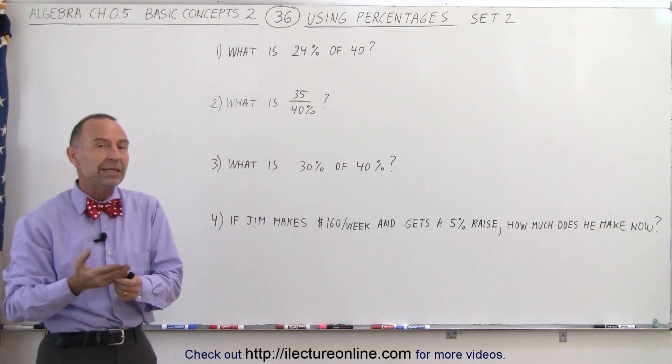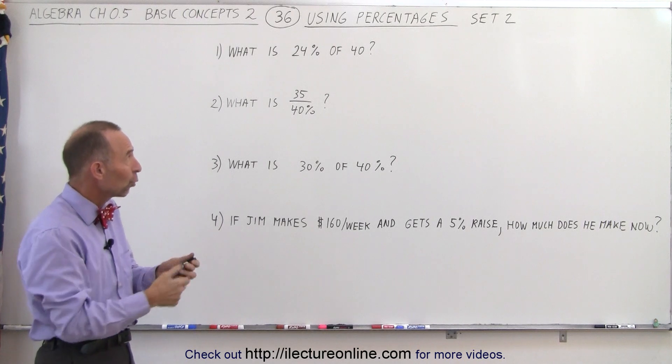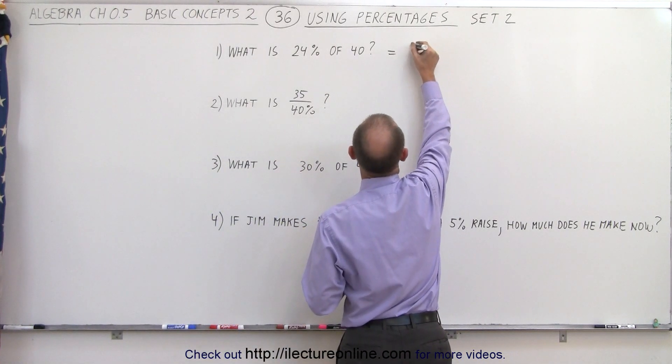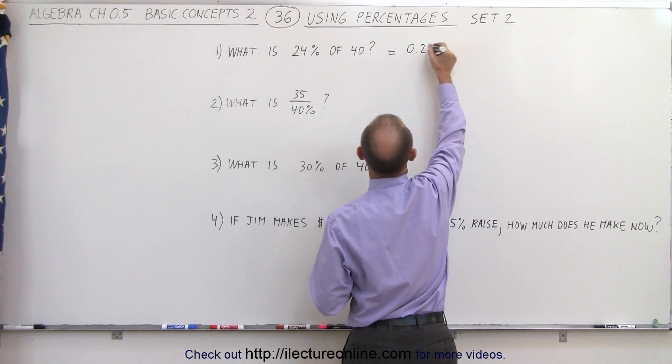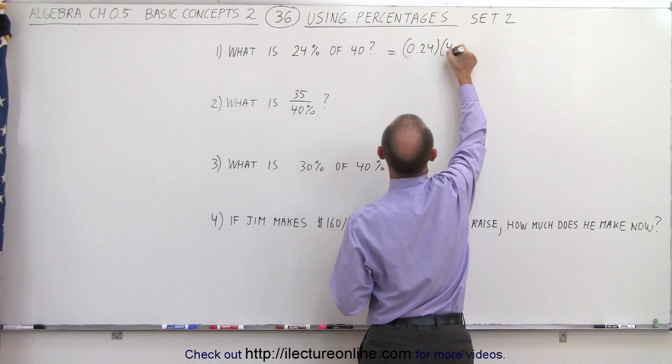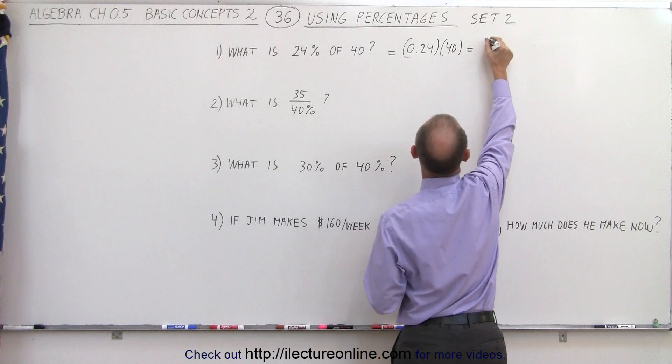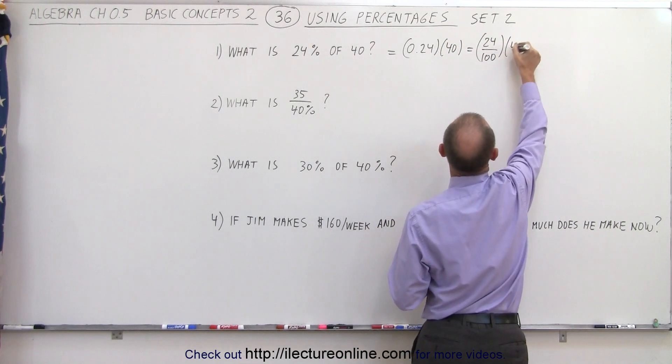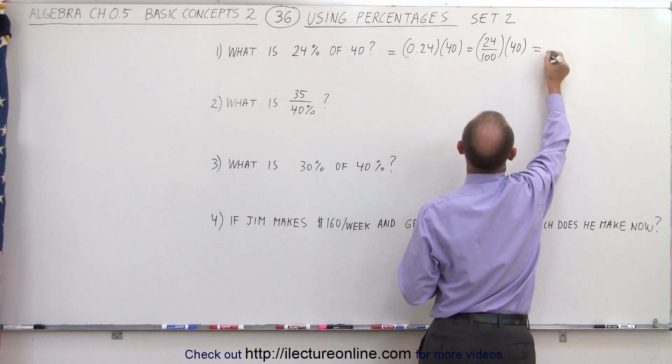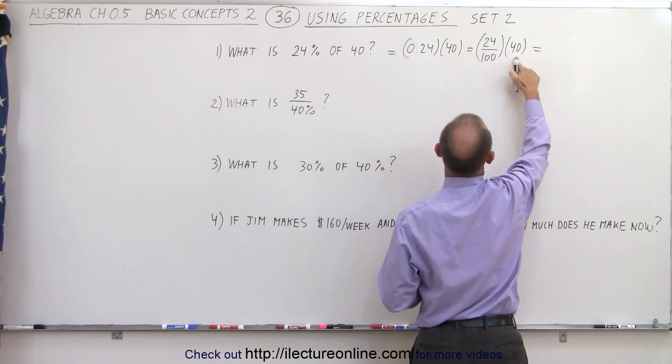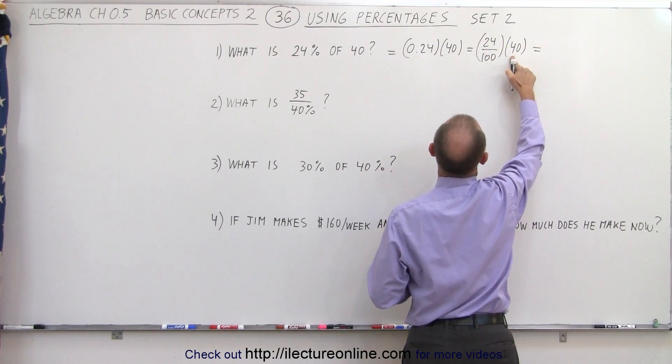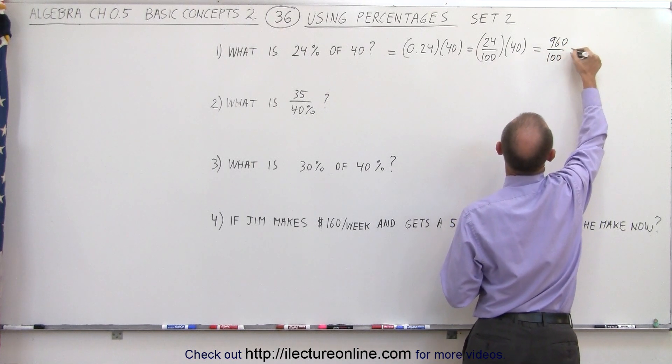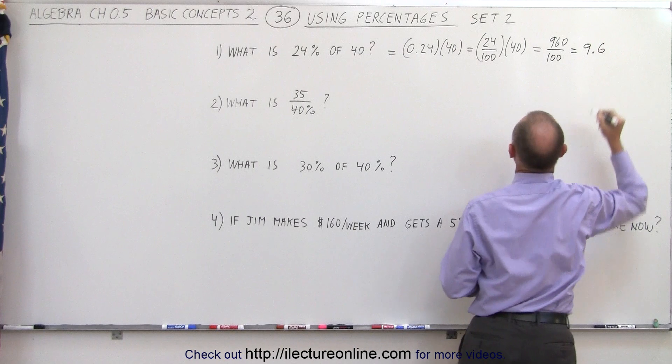24% can then be converted into a fraction or a decimal. So that means this is equal to 0.24 multiplied times 40, or we can write it as 24 over 100 multiplied times 40. So when we do that, we have 24 times 40. That would be 800, that would be 960 over 100, which is 9.6.